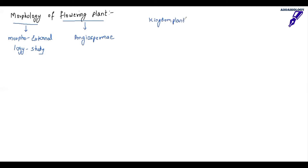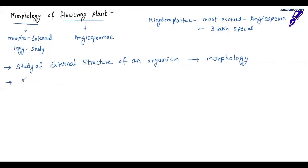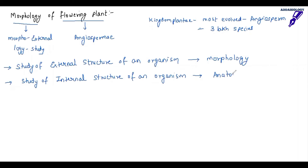Flowering plants are all angiosperms. In kingdom Plantae the most evolved kingdom is the angiosperm. There are more than 3 lakh species of angiosperm. Whenever you study the external structure of an organism it is called morphology, and when you study the internal structure — that is the dissected part of an organism — it is called anatomy.